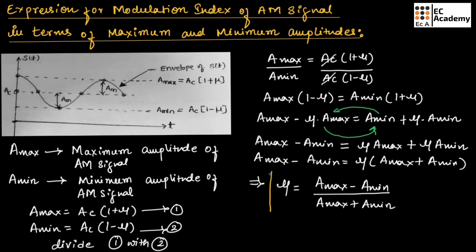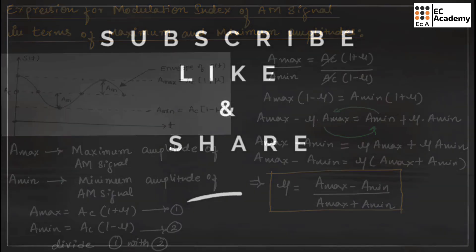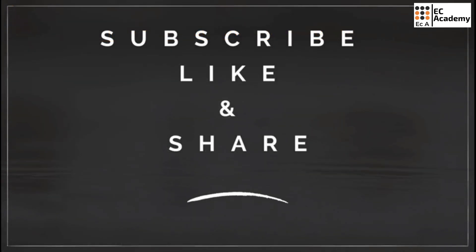This is the expression for modulation index in terms of maximum and minimum values of amplitude of an AM signal. I hope you have understood this topic. Thank you.